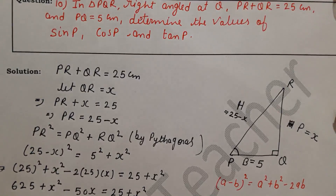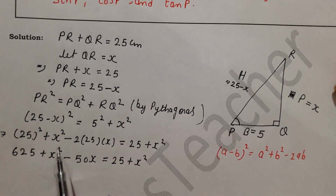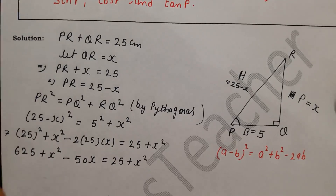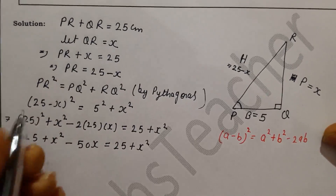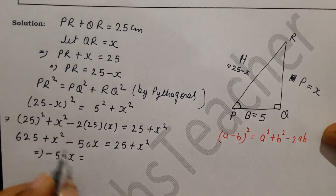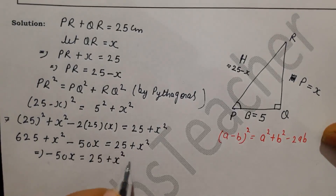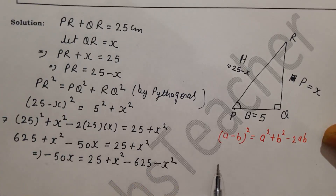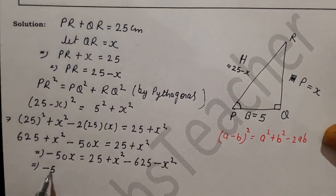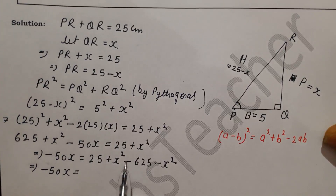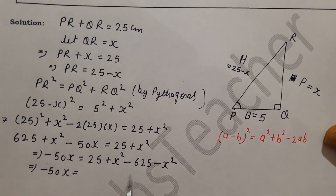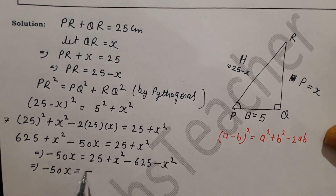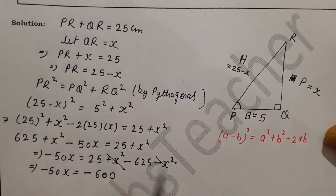Now let's find x. The x squared terms cancel on both sides, so we are left with: minus 50x equals 25 minus 625, which gives minus 50x equals minus 600. Dividing both sides by minus 50, x equals 12.